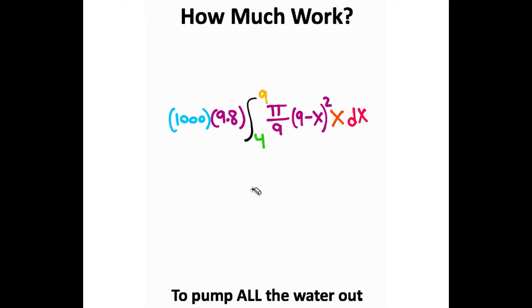If you run this equation, whether you do it by hand or on a calculator, you should get 748,310 joules if you work through the calculus. That is the amount of work it takes to pump all the water out of the cone.